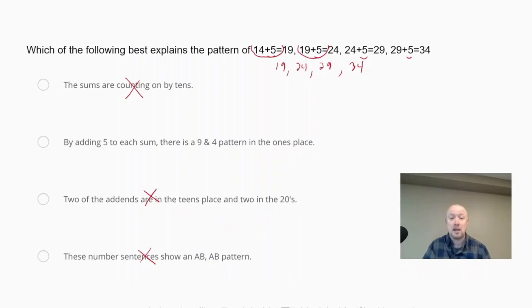So the only thing I can see here that would be true would be by adding 5 to each sum, there is a 9 and a 4 pattern in the ones place. So if we look at the ones place here, we have a 9, 4, 9, 4, and if we continued this pattern, we would have 39 if we added 5, so we would get another 9. So this is the correct answer.